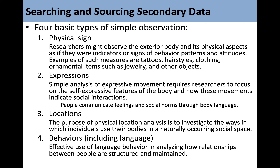There are four basic types of simple observation. The first is physical signs — researchers might observe the exterior or physical aspects of a body as indicators or signs of behavior patterns and attitudes. Examples of such measures are tattoos, hairstyles, clothing, and ornamental items such as jewelry and other objects.